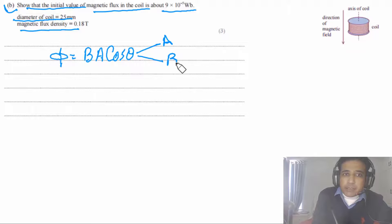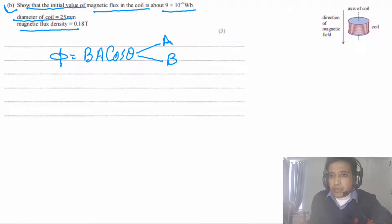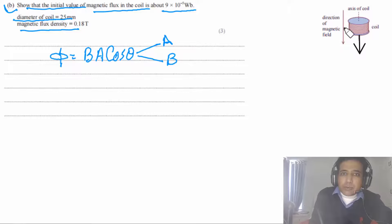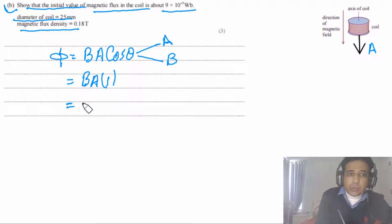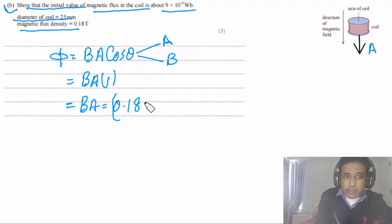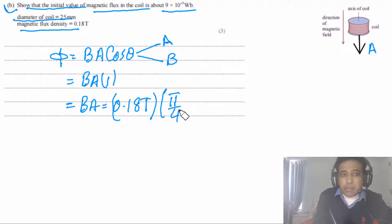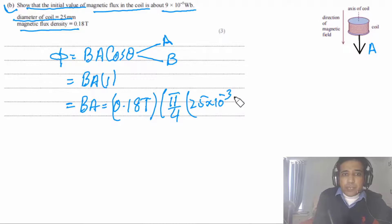B = 0.18 T. Diameter = 25 mm = 25 × 10⁻³ m. Area A = π/4 × d² = π/4 × (25 × 10⁻³)². Substituting: Φ = 0.18 × π/4 × (25 × 10⁻³)², which gives approximately 9 × 10⁻⁵ Wb.